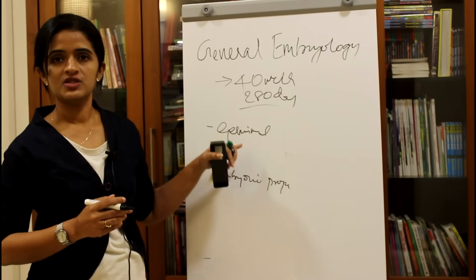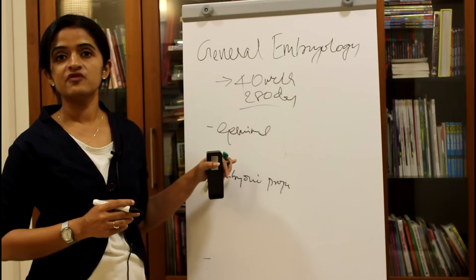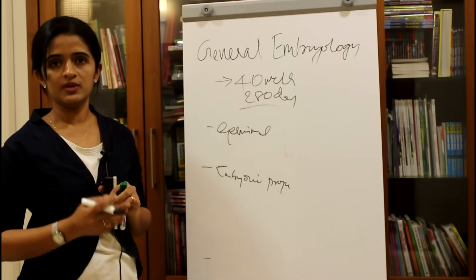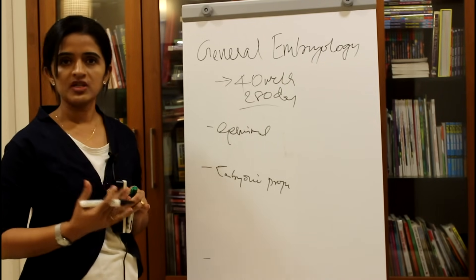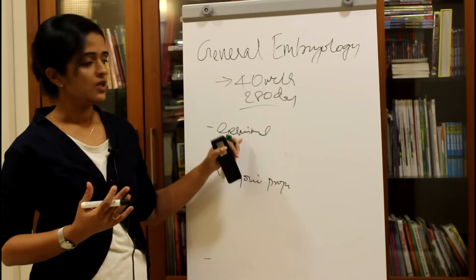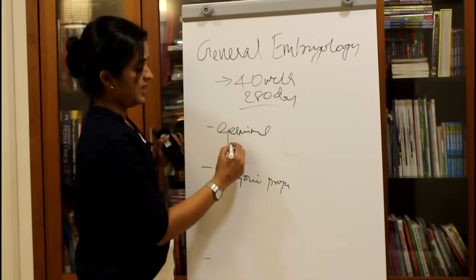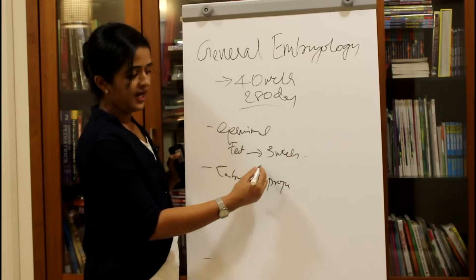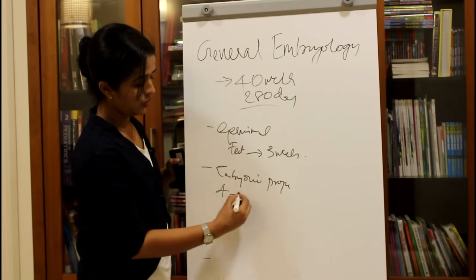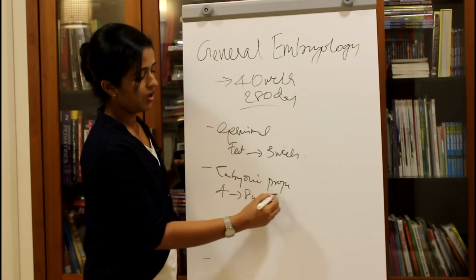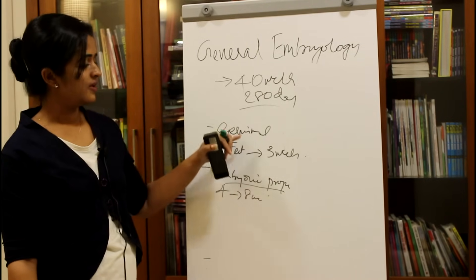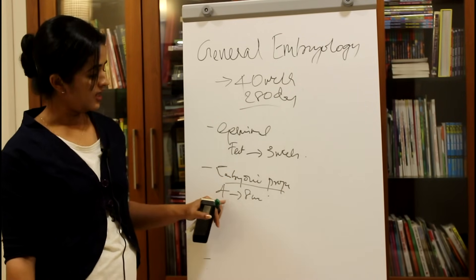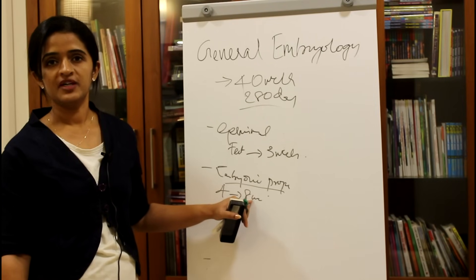The germinal period means, as the word implies, it is the formation of the germ layers. We know that we have 3 germ layers: the ectoderm, the endoderm, and the mesoderm. The formation of all 3 germ layers happens during the germinal period, which covers from the point of fertilization up to 3 weeks of development. From the 4th week to the 8th week it is called the embryonic period proper.